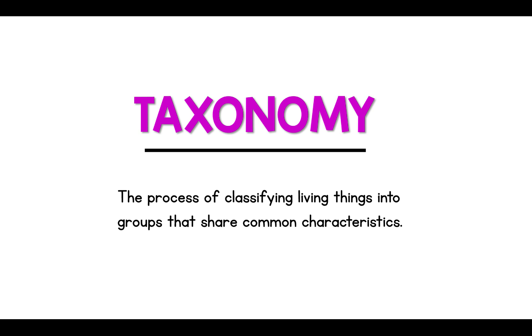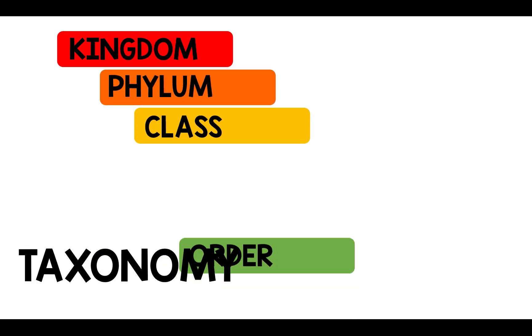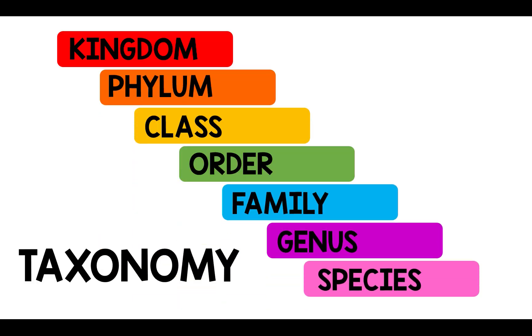It's easy. Kingdom, filum, class and order. Class and order. Kingdom, filum, class and order. Family, genus, species.